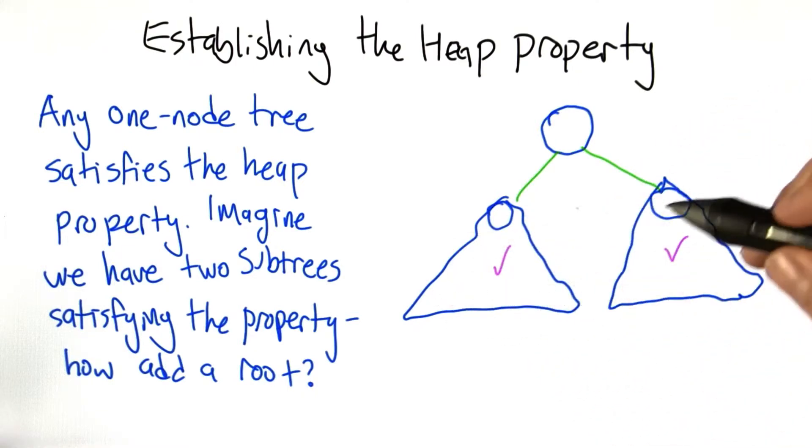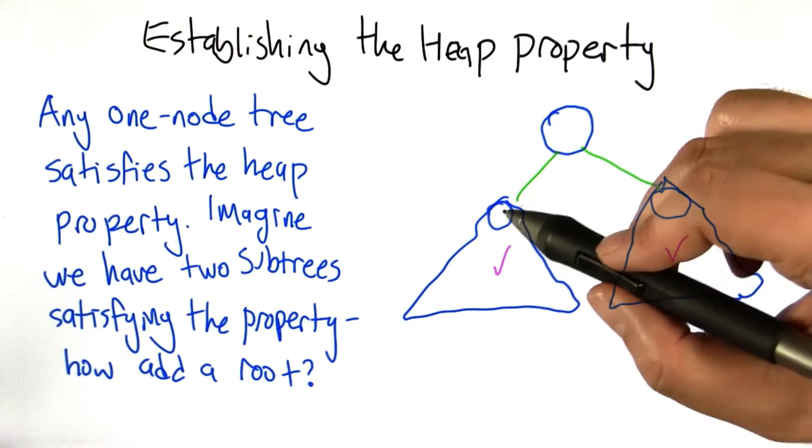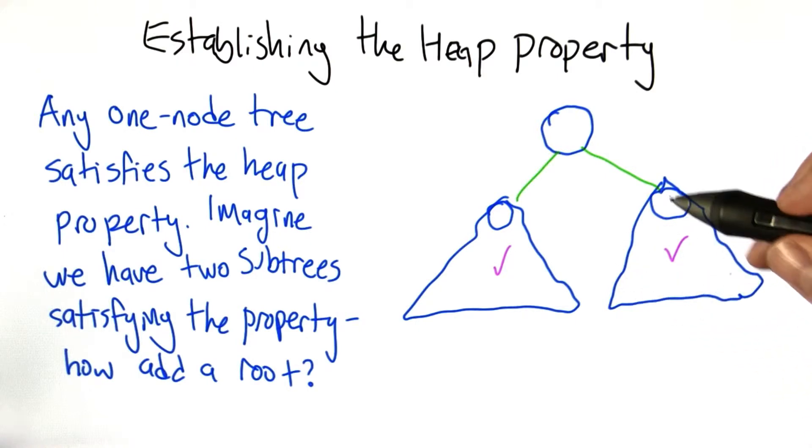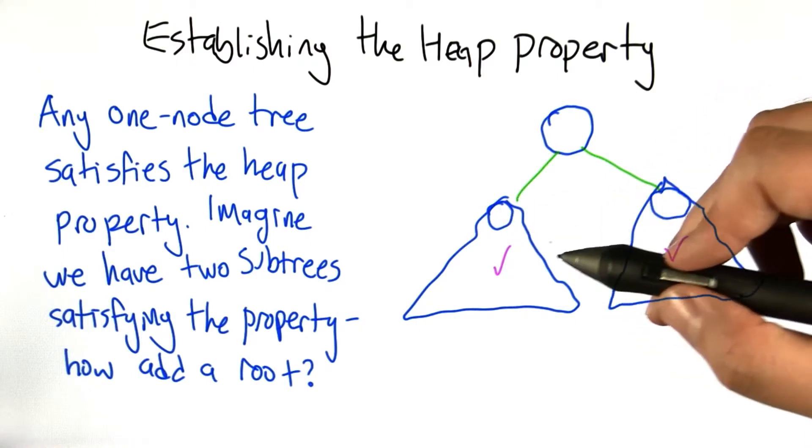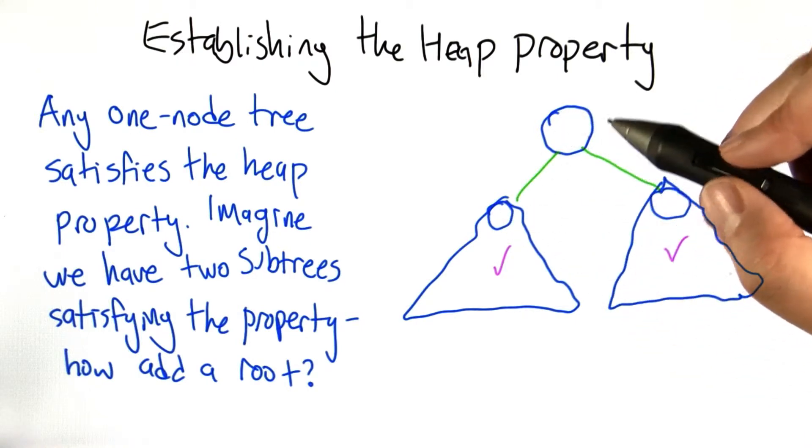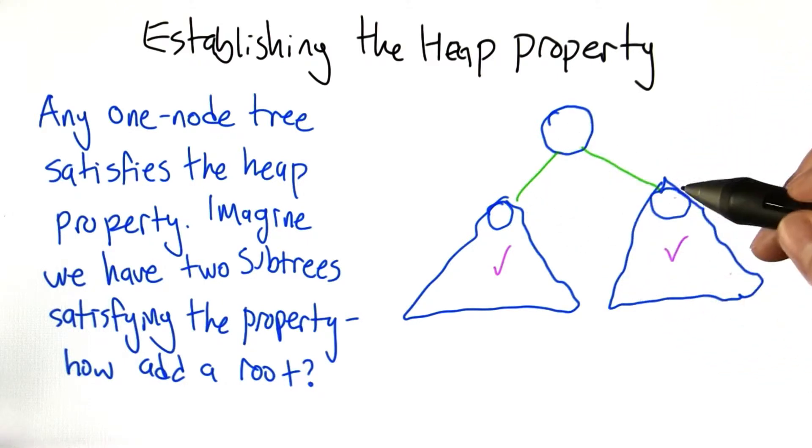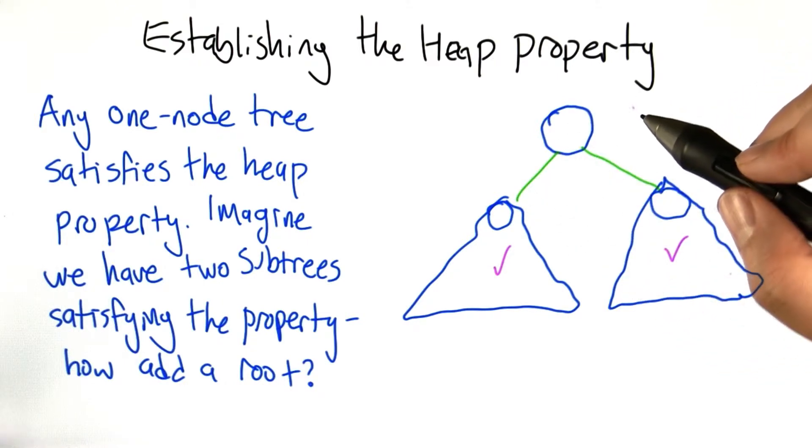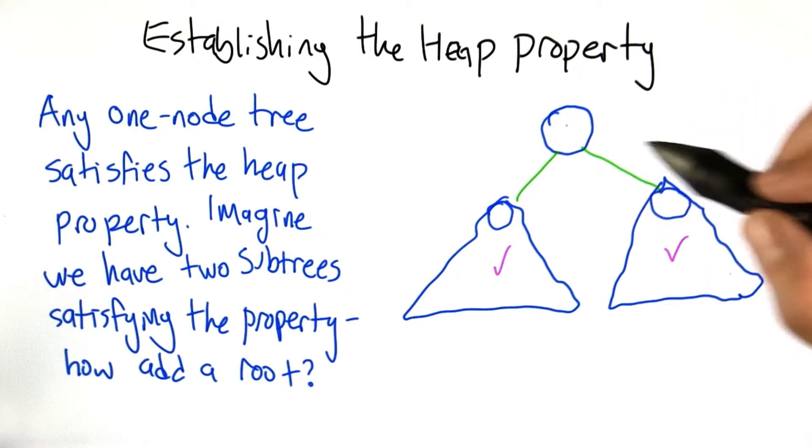Both of these subtrees satisfy the heap property, which means the smallest values in the entire heap are sitting here at the top at the relative roots. But now we're adding a new node. If this node is already smaller than these two, then everything's fine. But it might not be. It might be that this is a large value.